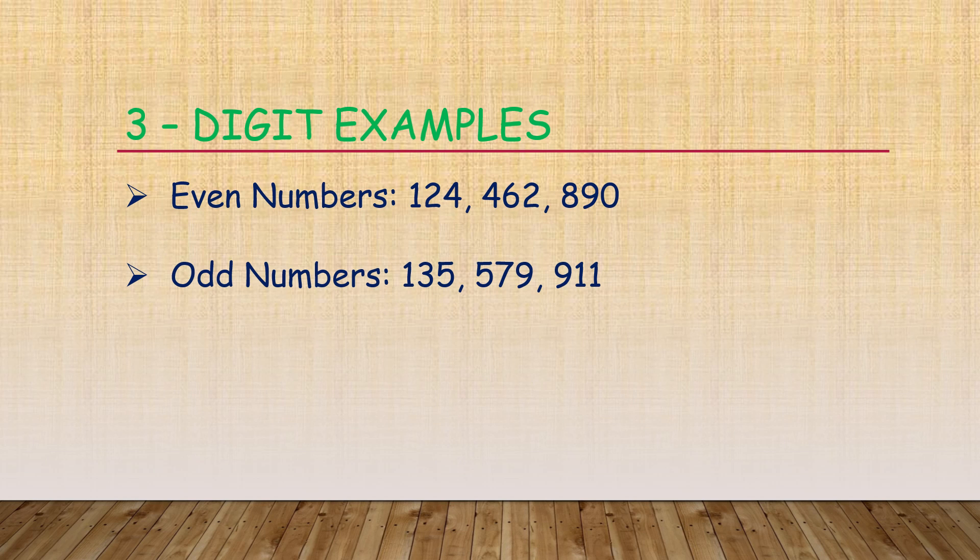Now here are some examples of 3 digits, even and odd: 124, 462, 890.